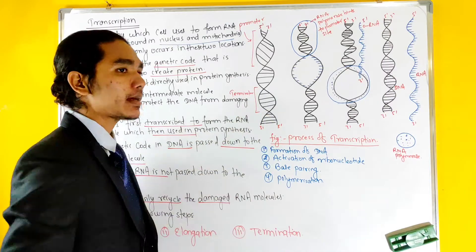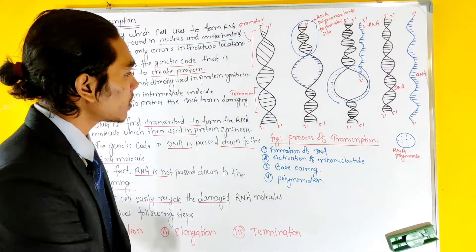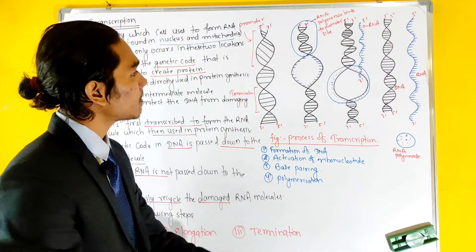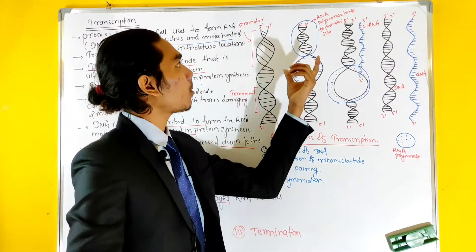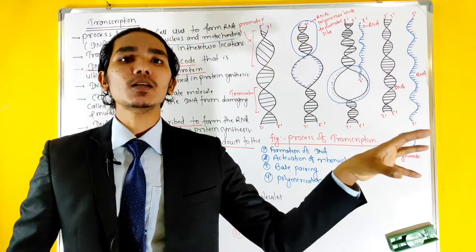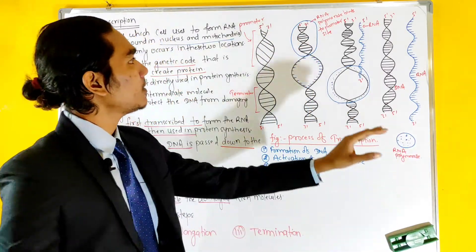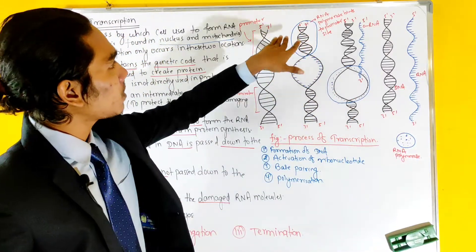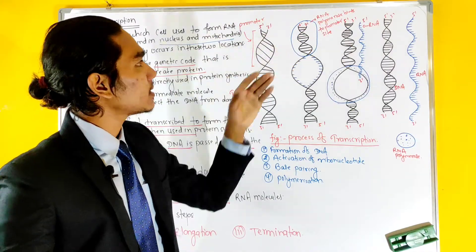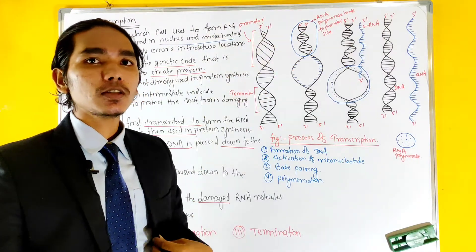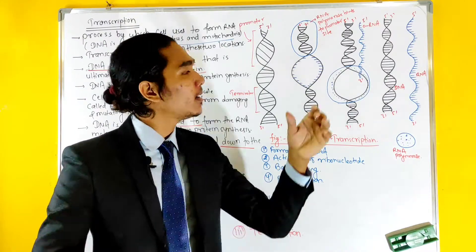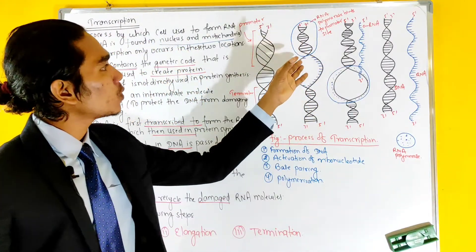The first part is the formation of RNA. RNA polymerase is activated in the DNA, and RNA polymerase binds to the promoter region to begin transcription.